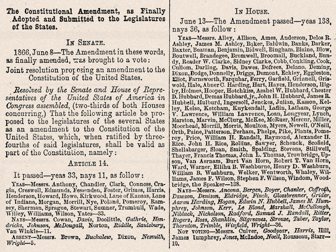Section 3: No person shall be a senator or representative in Congress, or elector of president and vice-president, or hold any office, civil or military, under the United States, or under any state, who, having previously taken an oath as a member of Congress, or as an officer of the United States, or as a member of any state legislature, or as an executive or judicial officer of any state, to support the Constitution of the United States, shall have engaged in insurrection or rebellion against the same, or given aid or comfort to the enemies thereof. But Congress may, by a vote of two-thirds of each House, remove such disability.